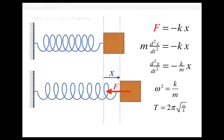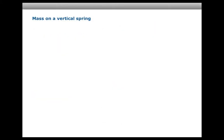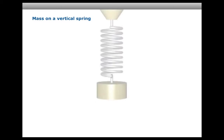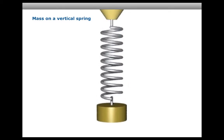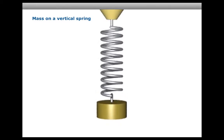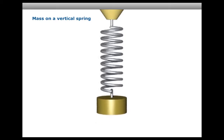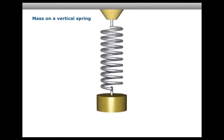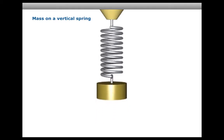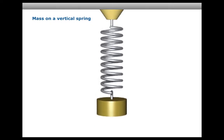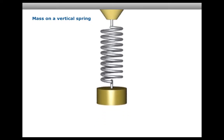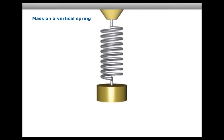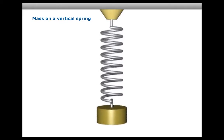Let's change things a little bit and look at a mass that is oscillating on a vertical spring. This mass is undergoing simple harmonic motion, but we don't want to just assert that — we have to show that that's the case. So that's what we're going to do now.